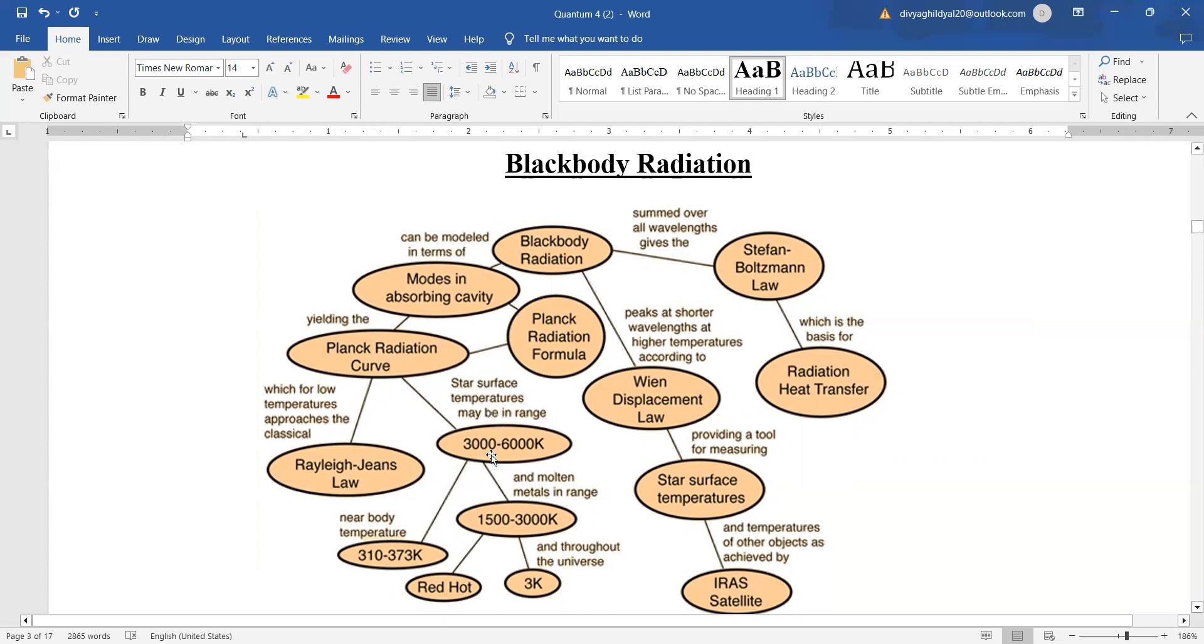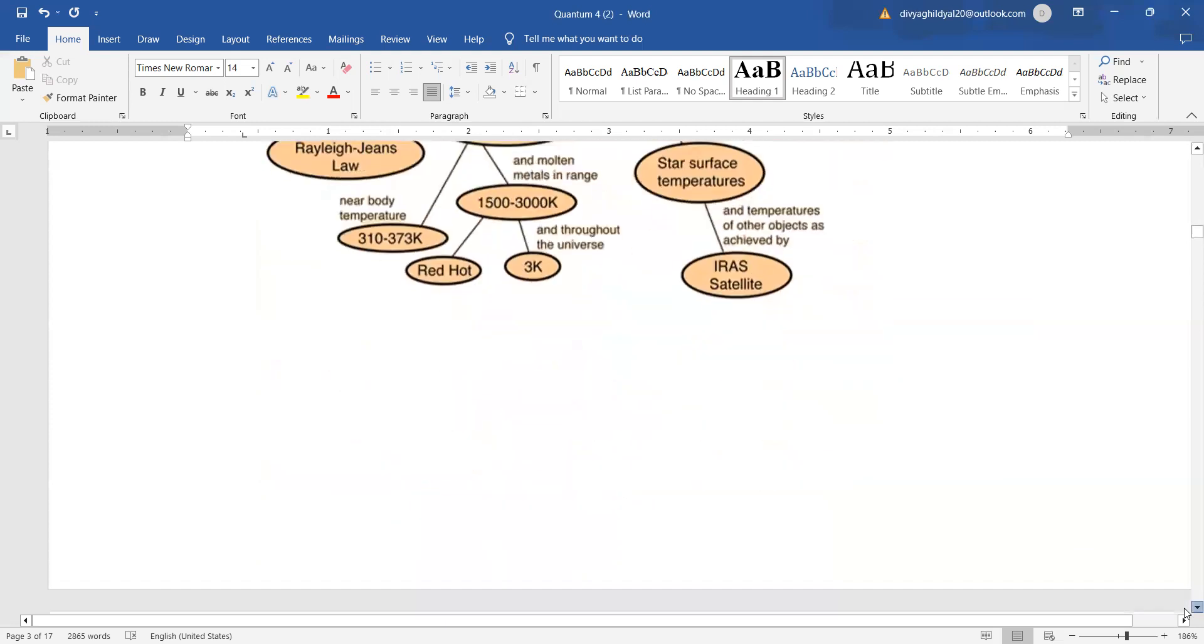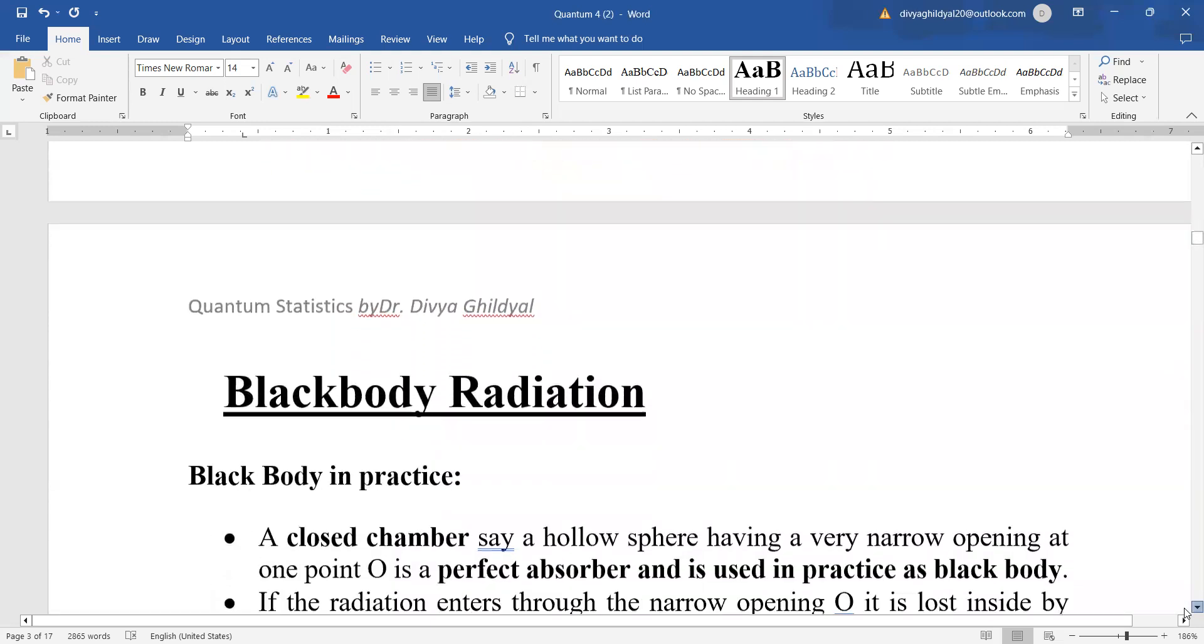Planck's radiation formula and Planck's radiation curve come into being. For low temperature, it approaches the Rayleigh-Jeans law. Star surface temperatures come in the range of 3000 to 6000 Kelvin. These three laws you should know under black body radiation.